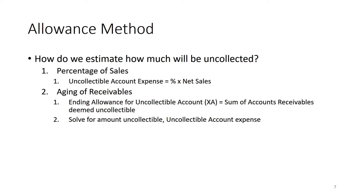The second methodology is known as aging of receivables. Under the aging of receivables, it's a two-step system. First, you solve for the ending allowance for uncollectible accounts, which is the sum of accounts receivable deemed uncollectible. Then in the second step, you solve for the uncollectible account expense.